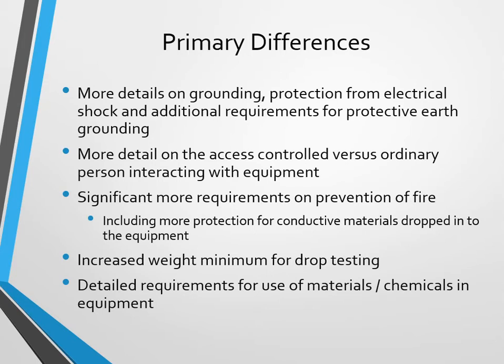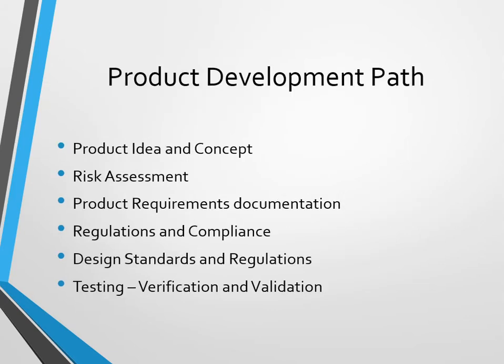However, I think it's a great place to go. If you're moving from 60950 to 62368, we certainly can help you do that. Here's what we typically see as a product development path: you and your team will come up with product ID and a concept. We'll help you do an initial risk assessment, scope the document, add the product safety and listing requirements into your product requirements document, and help you understand all the regulations and compliance that needs to happen. We can provide the standards and regulations to design to, and help with test, verification, and validation — sharing the burden between us.